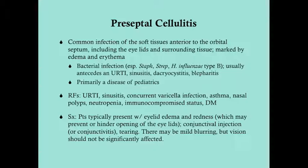Preseptal cellulitis is primarily caused by Staph, Strep, and Haemophilus influenzae type b (Hib). We don't see preseptal cellulitis as much as we did 30 to 40 years ago because of the Hib vaccine — we now immunize babies with it, which has significantly reduced cases. Preseptal cellulitis usually follows an upper respiratory tract infection, particularly sinusitis, or can spread from eye infections like dacryocystitis, blepharitis, or conjunctivitis. Eighty percent of cases occur in patients under age 10, with the majority under age five.